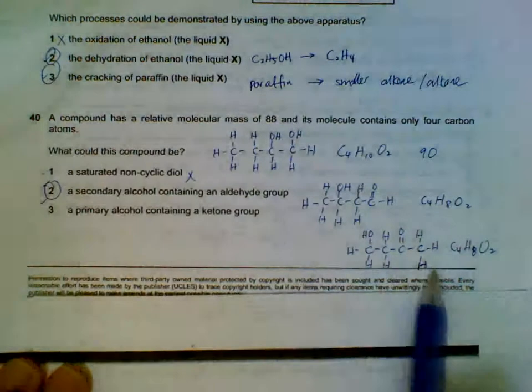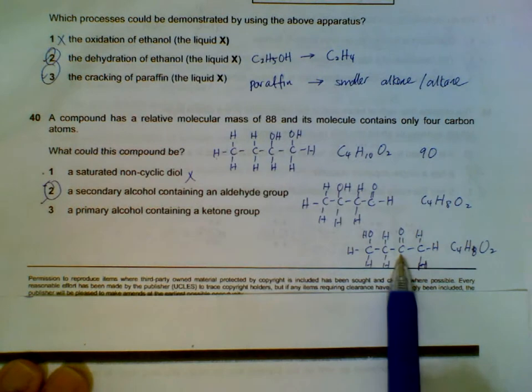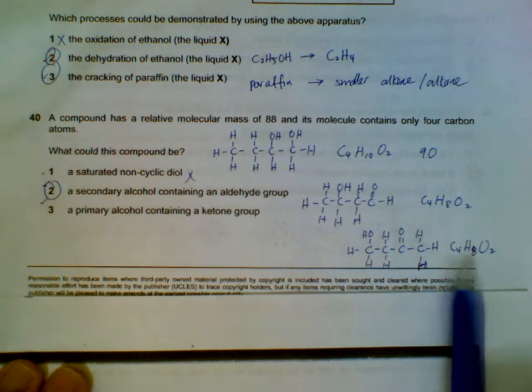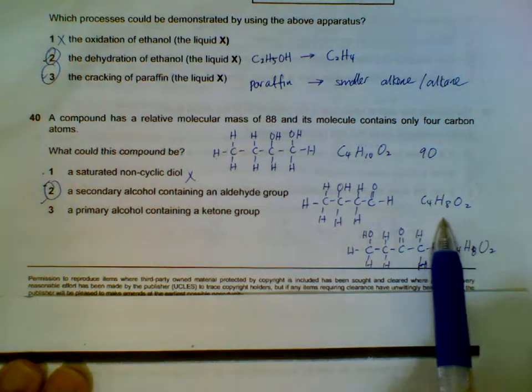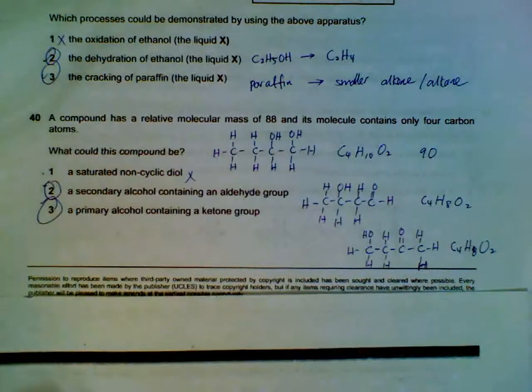Primary alcohol containing a ketone: repeat the process - put the alcohol on the first carbon for primary, ketone forms here. It is also C₄H₈O₂ like just now; it will have an Mr of 88 also.